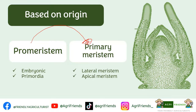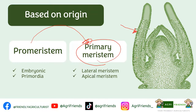We also have a root apical meristem. The primary meristem will give rise to the protoderm, procambium, and the ground meristem. The protoderm is the outermost layer, and this is the procambium. Between the protoderm and the procambium is the ground meristem.